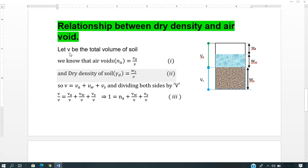Let V be the total volume of soil. Air void ratio Na equals volume of air divided by total volume. Dry density gamma d equals weight of solid divided by total volume of soil.